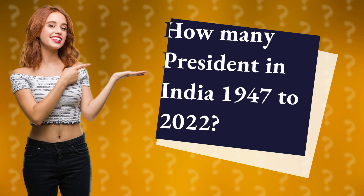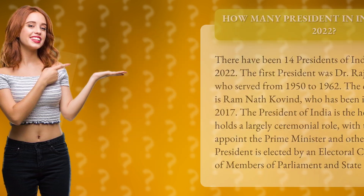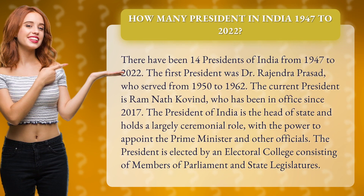How many presidents in India from 1947 to 2022? There have been 14 presidents of India from 1947 to 2022. The first president was Dr. Rajendra Prasad, who served from 1950 to 1962.